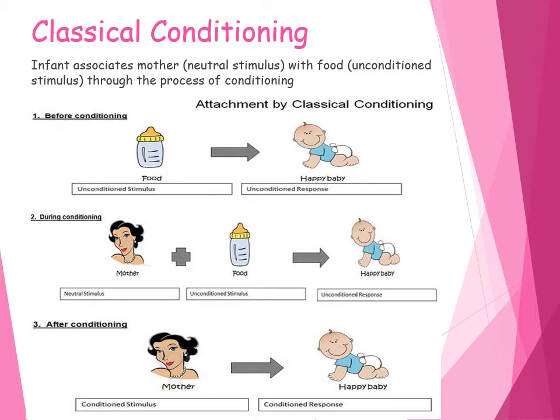Try to use the key terms: neutral stimulus, unconditioned stimulus, unconditioned response, conditioned stimulus, and conditioned response. Describe what is happening during each phase: before conditioning, during conditioning, and after conditioning. Do not mention Pavlov's dogs — keep the explanation focused on attachment, using mother, food, and infant.